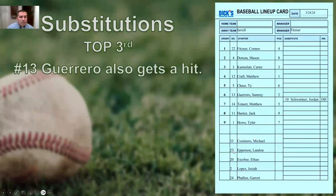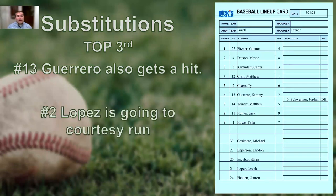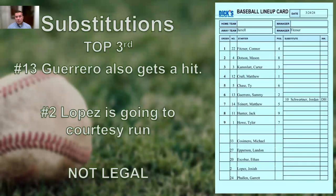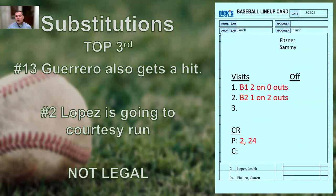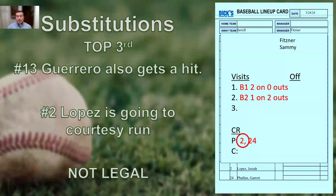Still on the top of the third — number 13, Guerrero, also gets a hit. Guerrero is our catcher. Number 2, Lopez, is going to courtesy run for him. Is this legal? No — Lopez cannot run for the catcher because he's already run for the pitcher. Once you courtesy run for one position, you run for that position for the entire rest of the game. You cannot switch over. And remember: both number 2 and number 24 can now only ever courtesy run for the pitcher.